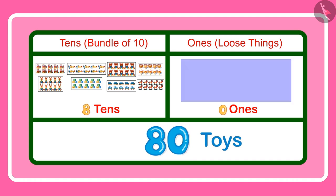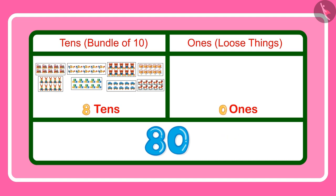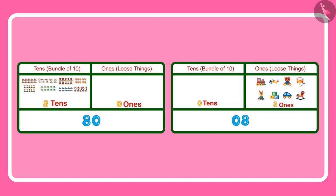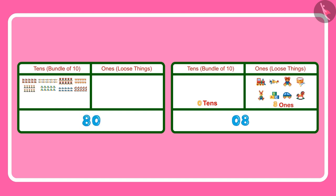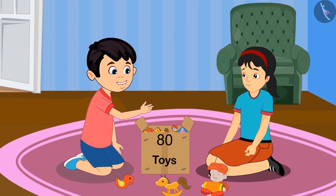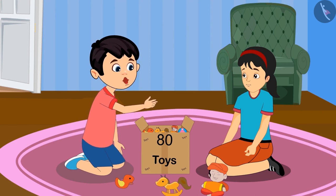Which means not even a single loose toy. Oh, so it means that this 0 is telling us only about the ones place. Yes Chotu, 80 has 0 ones and 8 tens. And 8 has 8 in the ones place and 0 in the tens place. So see, there is a lot of difference between the 2 numbers. 80 is bigger than 8. Alright Pinky, I have understood. Let us start playing now.